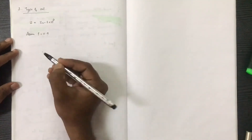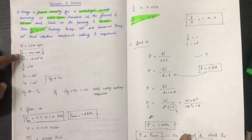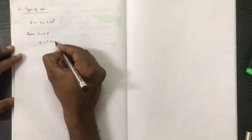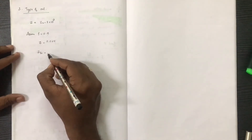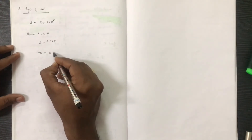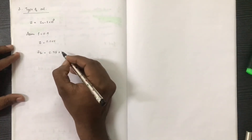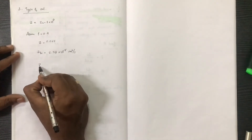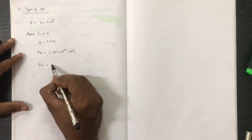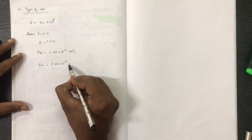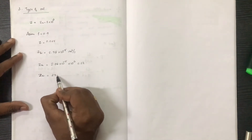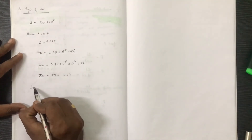The viscosity is 10.0 × 10⁻³ Pa·s. The clearance parameter is 0.025. The value of ZK is equal to 27.8.